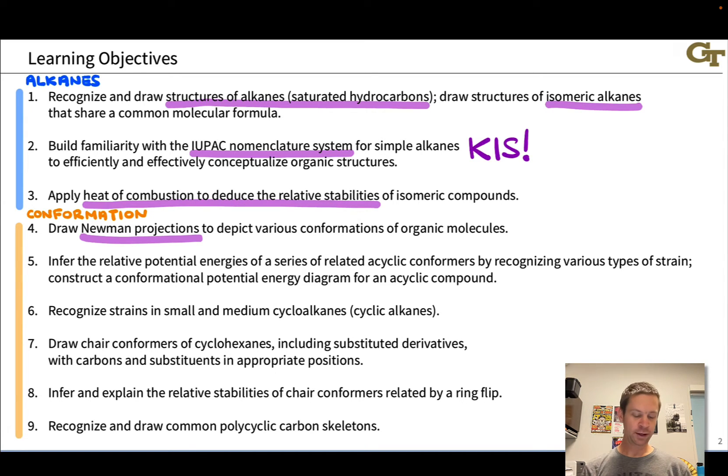We'll then look at the dependence of energy on conformation. How does the energy of a molecule change as we rotate about a single bond in the molecule, focusing first on acyclic conformers, acyclic conformations. And what we'll end up doing, the ultimate goal here, is to construct a conformational potential energy diagram or conformational coordinate diagram for rotation about a particular single bond in an acyclic compound.